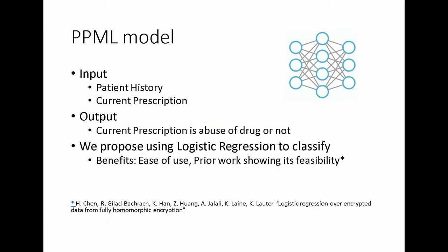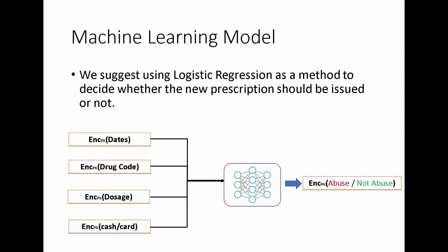For the privacy-preserving machine learning model, the model takes as input the patient's prescription history and the current prescription, and outputs whether the prescription indicates drug abuse — essentially a binary classification problem. We propose using logistic regression because it's easy to work with and there is prior work showing its feasibility. The model takes sensitive information such as days, drug code, dosage, and whether the patient paid with cash or card, and returns the encrypted version of the classification result.